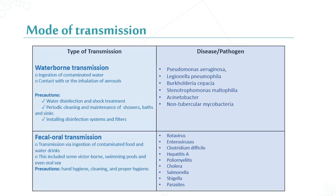Waterborne transmission occurs through contact with or inhalation of contaminated water. Precautions include water disinfection and shock treatment, product cleaning, and maintenance of showers, baths, and sinks. The most important examples are Pseudomonas, Legionella, and Acinetobacter.